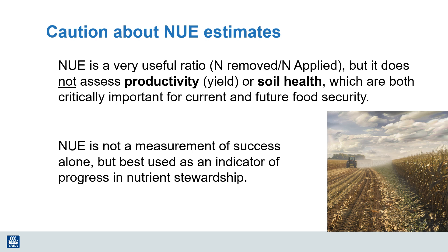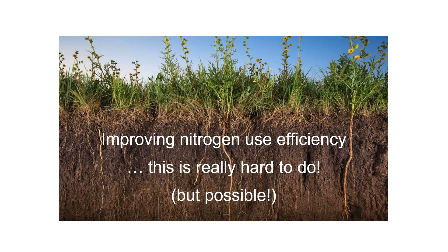In summary, nitrogen use efficiency is very useful as a measure of progress in nutrient stewardship, but it is not the end goal by itself. As discussed in previous videos, achieving a nitrogen use efficiency of greater than 90% indicates destructive mining of soil organic matter, and looking at NUE alone does not account for farm productivity, food production, crop yields, and other soil health measurements. Most scientific studies point us toward the four R's of nutrient stewardship — the right source of nutrients, at the right application rate, at the right time, and in the right place. I hope to see you in the next video.